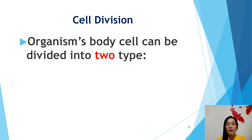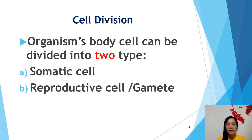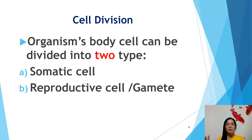The organism's body cells can be divided into two types: somatic cells or reproductive cells. All the cells inside our body can be divided into two groups — either somatic cells or reproductive cells. Reproductive cells we call gametes. There are only two types of reproductive cells: for male we call it sperm, and for female we call it ovum. The rest are all somatic cells.